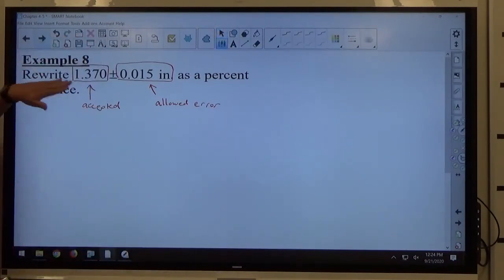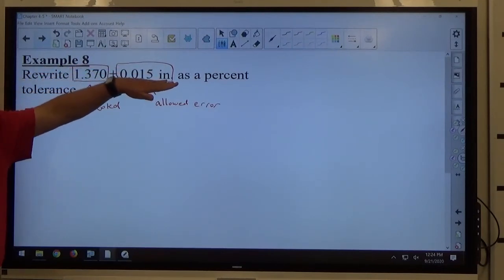That's what we're looking at—the accepted measurement, what we're supposed to have. That's what we said it was. This is how much we're allowed to be off by.